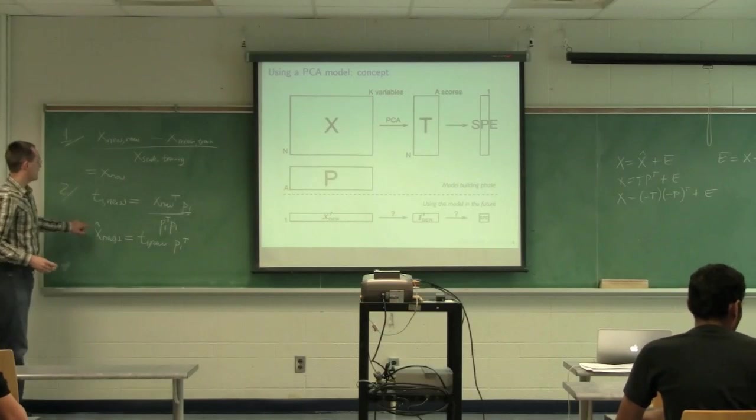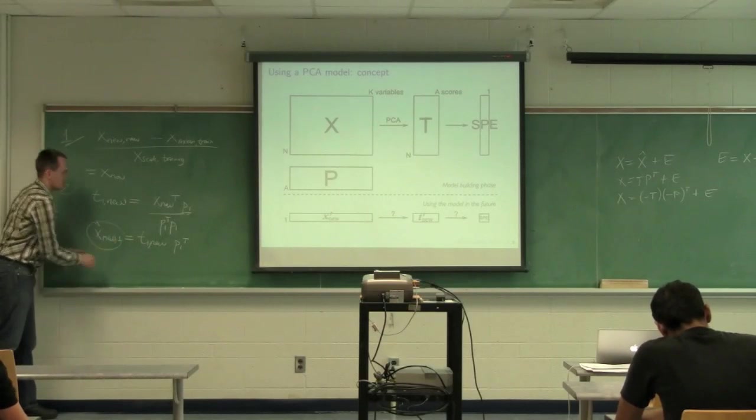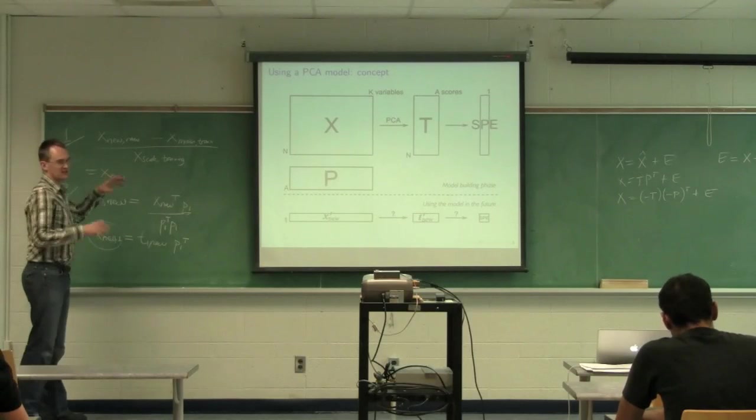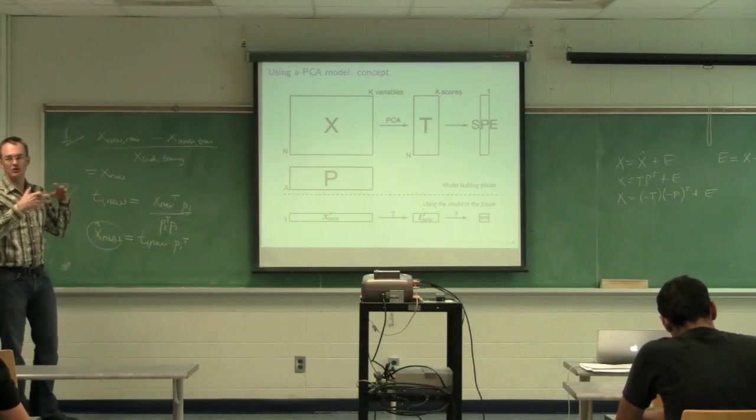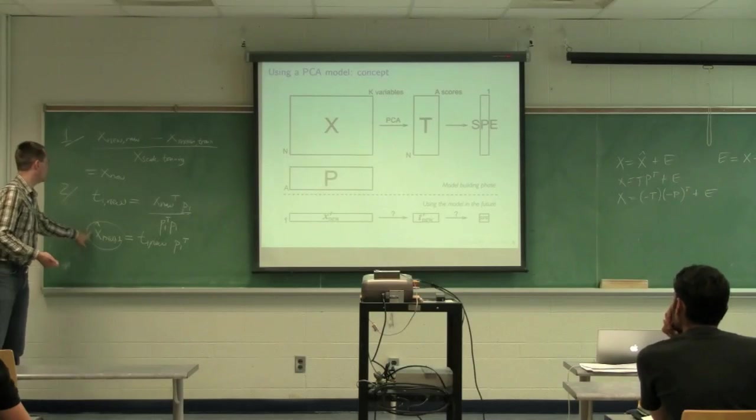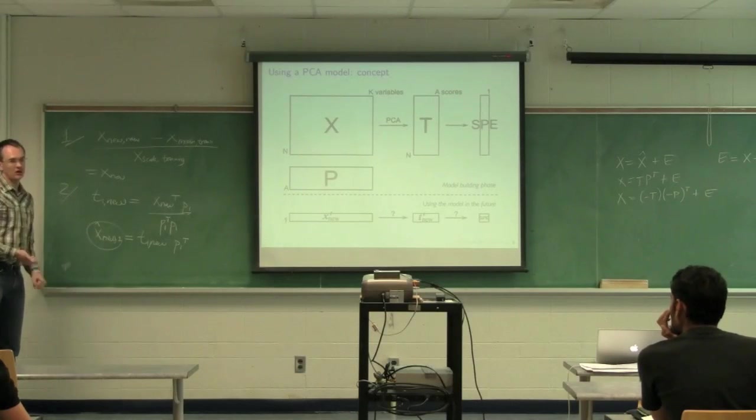x_hat_new. So then we calculate x_hat_new comma 1. I'll indicate that because we're going to use one component to calculate x_hat. Is equal to t1_new times p1 transpose.